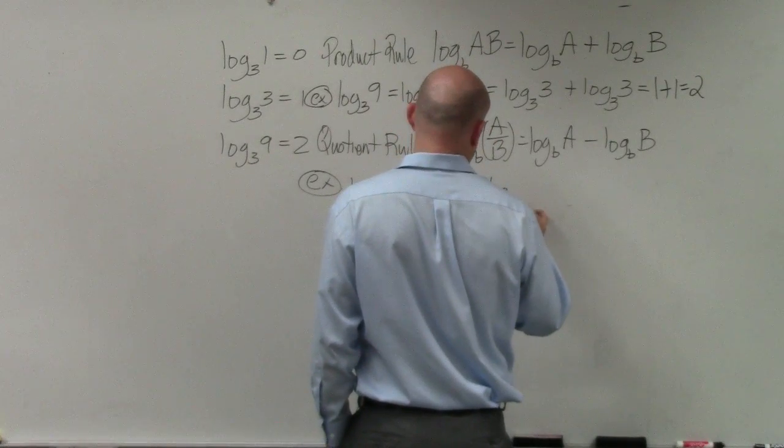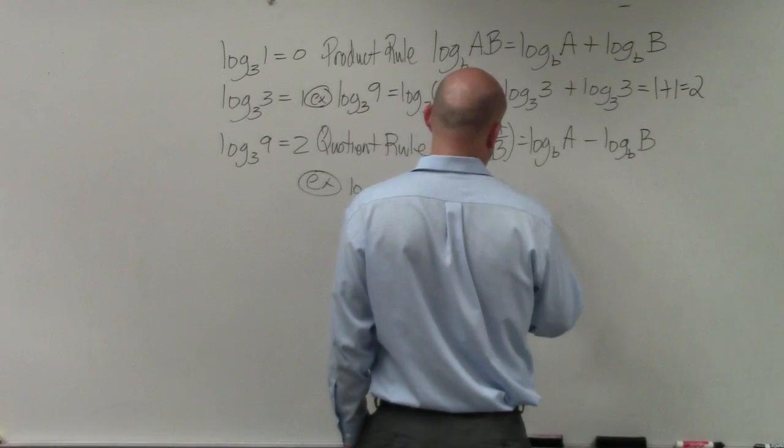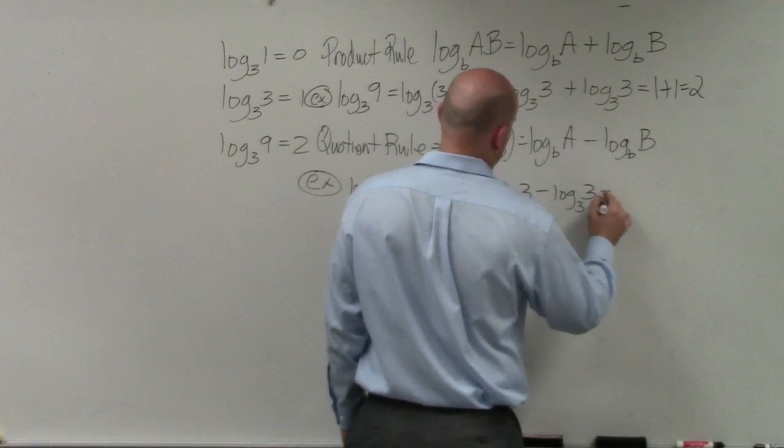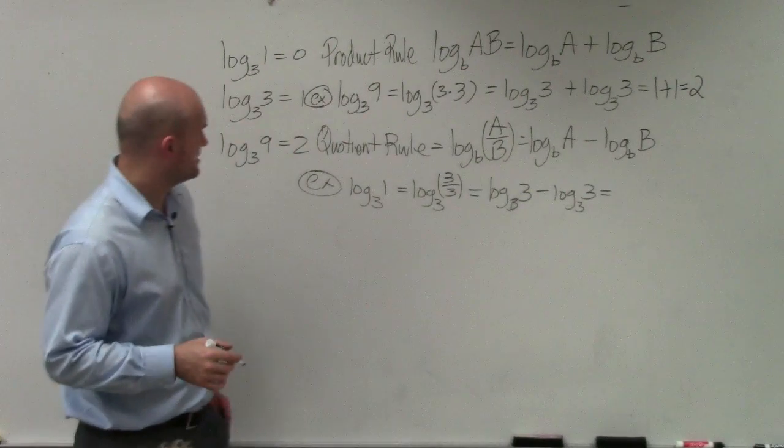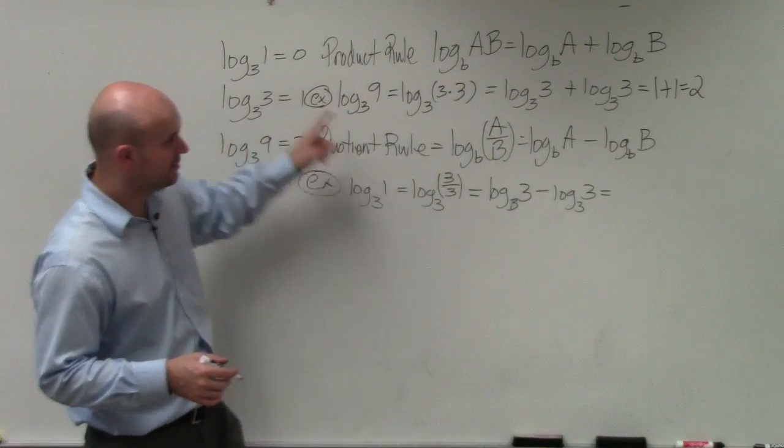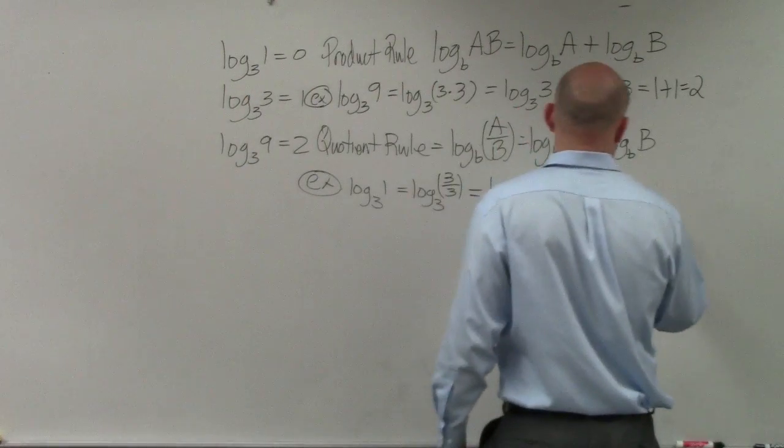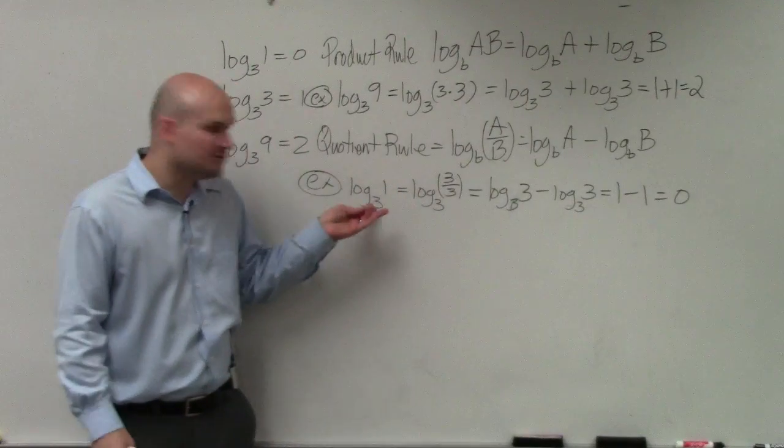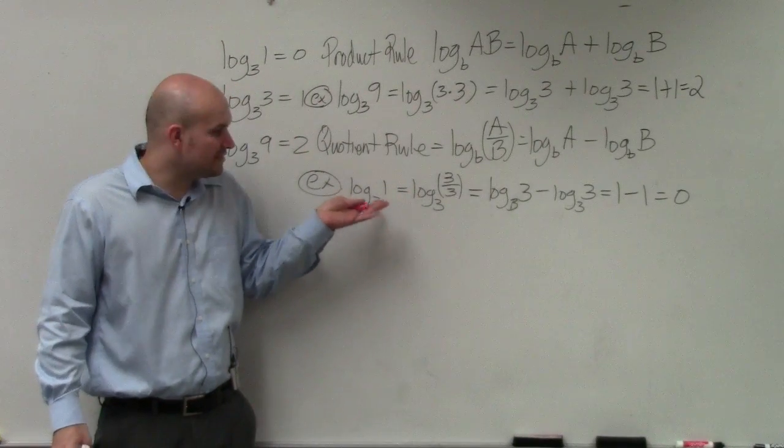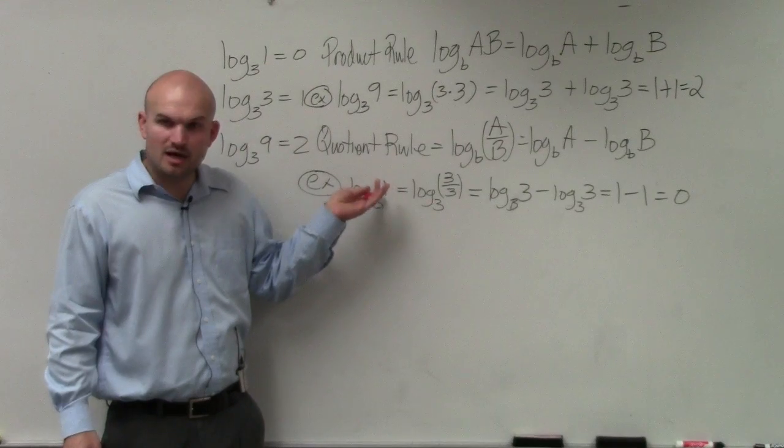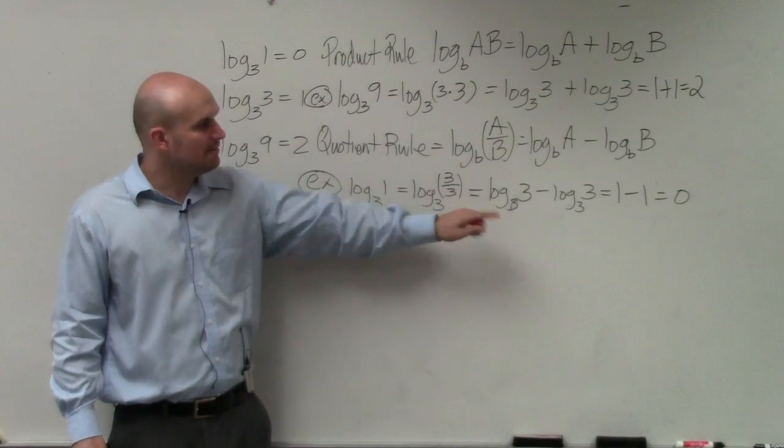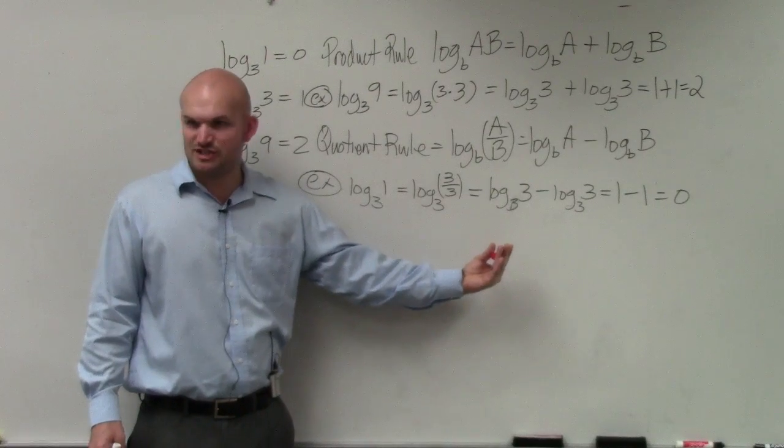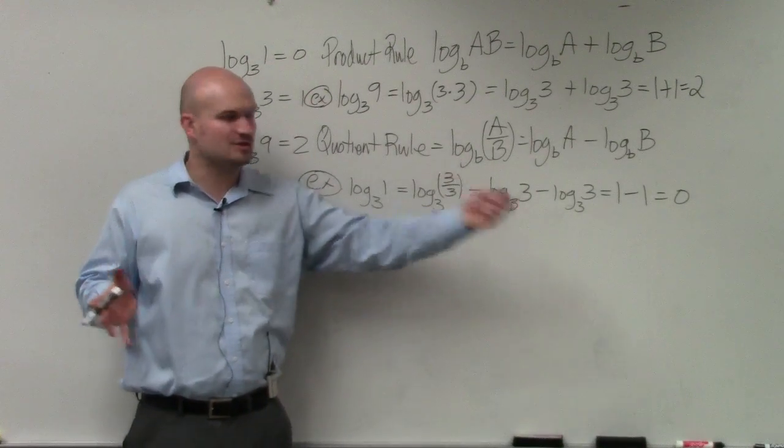So I get log of 3 of 3 minus log of 3 of 3. Well, log base 3 of 3 is equal to 1 minus 1, which is 0, which we knew the other answer. We already knew that was going to be the case. We knew that 3 raised to what number was 1 had to be 0. But I just want you to show by expanding them, we're just writing them in a different format. I'm not changing the answer. I'm just rewriting the whole expression.